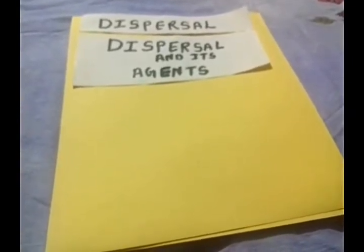Hello dear students. In this chapter on reproduction of plants, we have previously seen about seeds and germination. A short definition of dispersal: the process by which seeds are scattered away from the parent plant is called dispersal. Now we will see about dispersal and its agents.